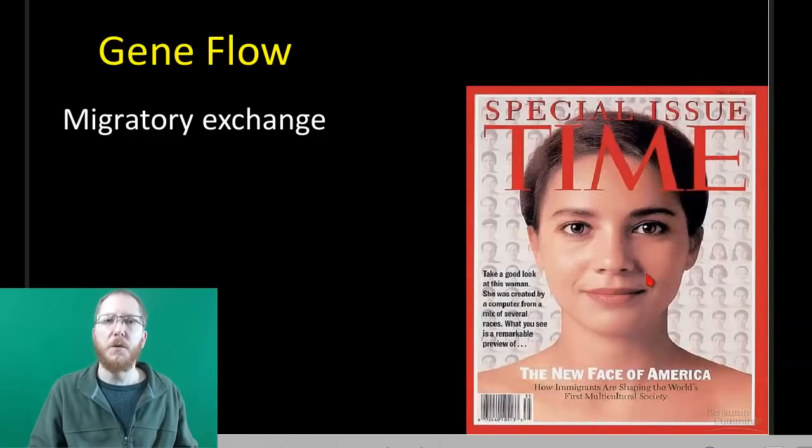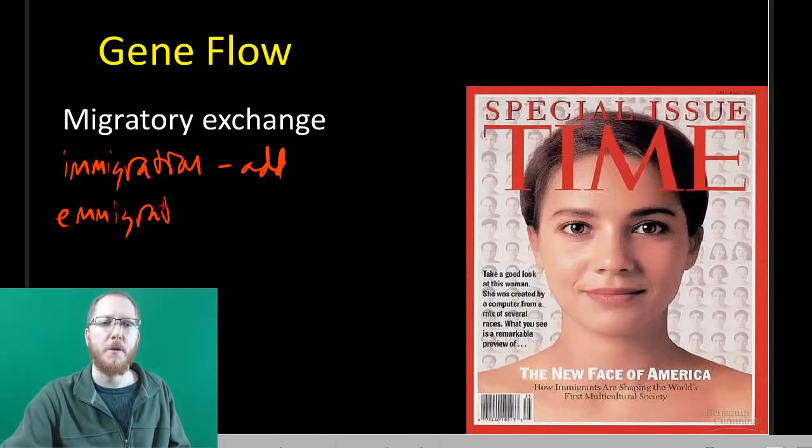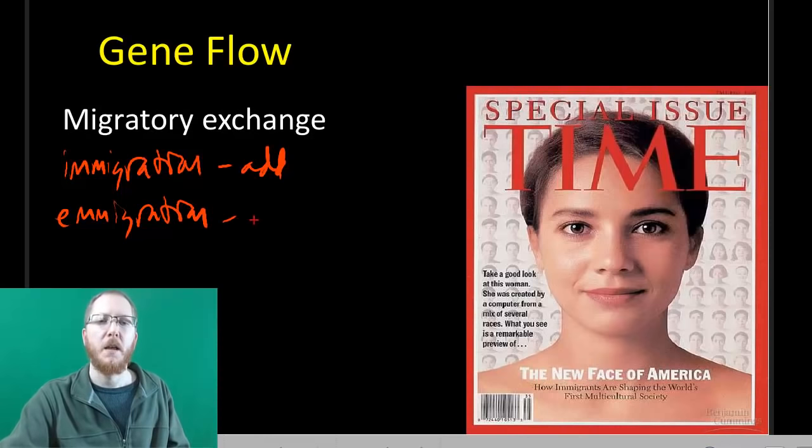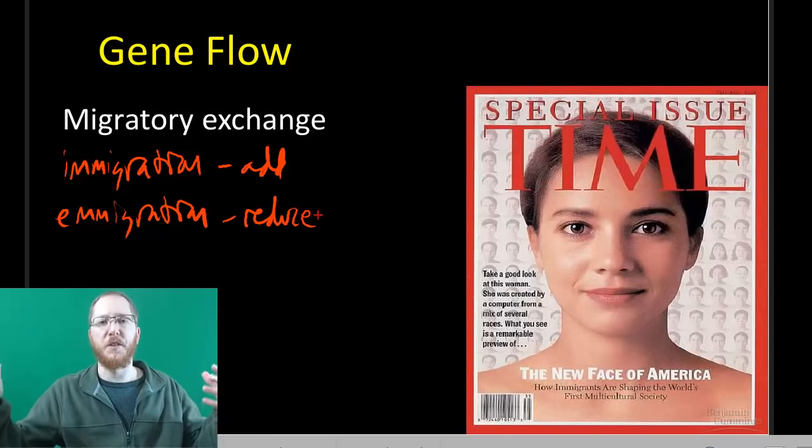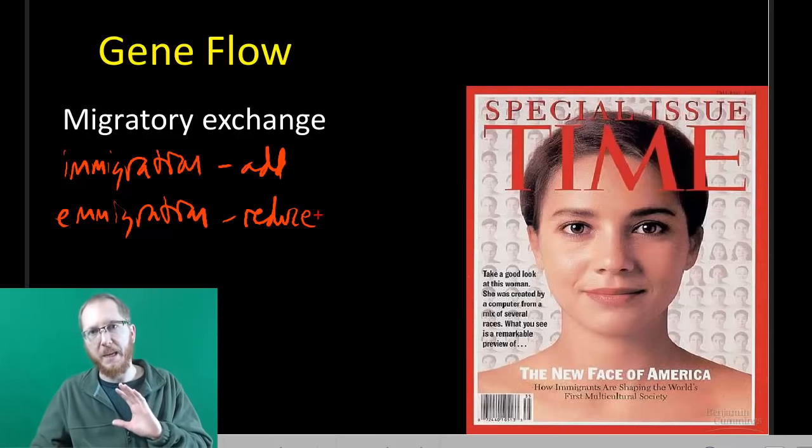Next thing is gene flow. This is just migration. If you have something that is going to be immigration, which is going to be in, this one's typically going to add to your gene pool. If you're talking about emigration, where people are ultimately leaving, then typically that's going to reduce your genetics that are within your gene pool. Migration is not just a one-dimensional thing. It's about both coming in and leaving.